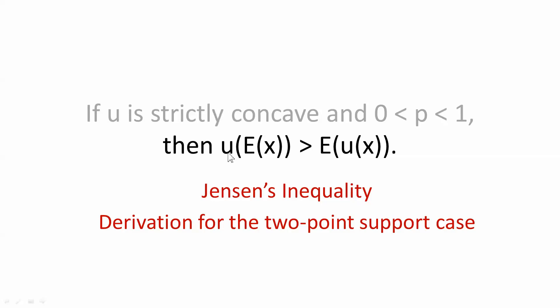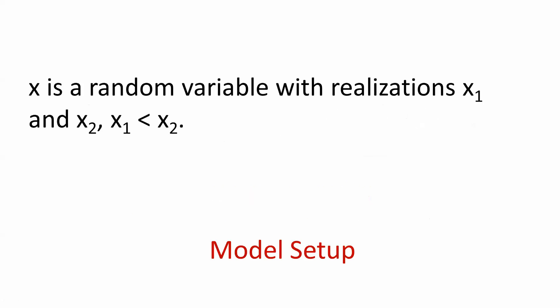The result we want to show is that the utility of the expected value — getting the expected value for certainty and then taking the utility of that — is strictly greater than the expected utility of the gamble. This is a statement that the individual actually does not like risk.